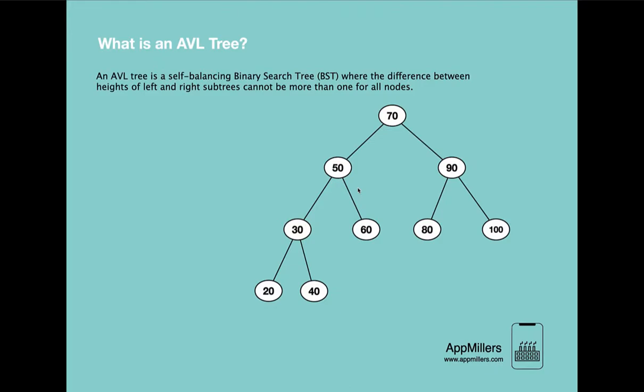So how can an AVL tree keep a binary search tree balanced? The mechanism is very simple: it uses height balancing. Looking at this example, if we take the root node we will see that the left subtree's height is 3 and the right subtree's height is 2, and the difference between these heights is 1. So this means that this root node is balanced.